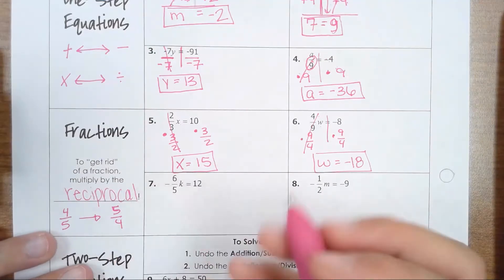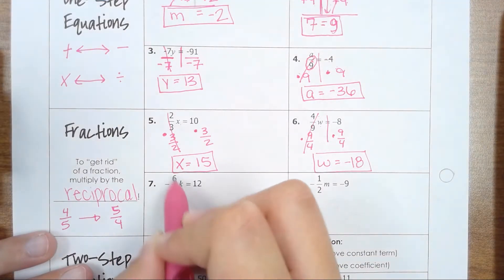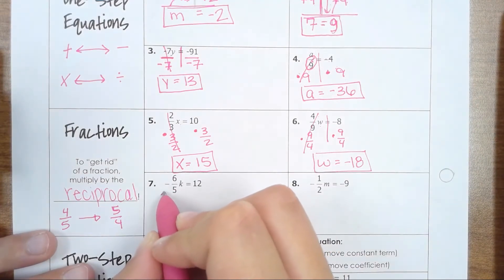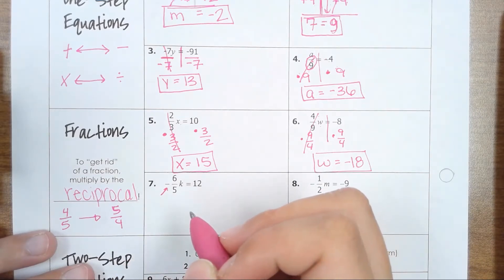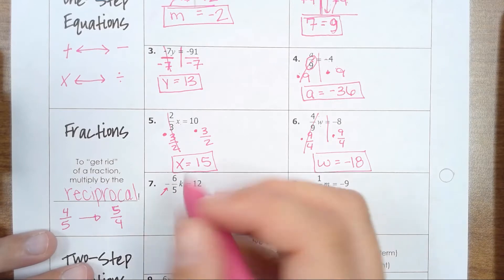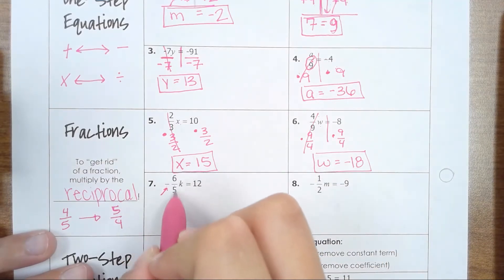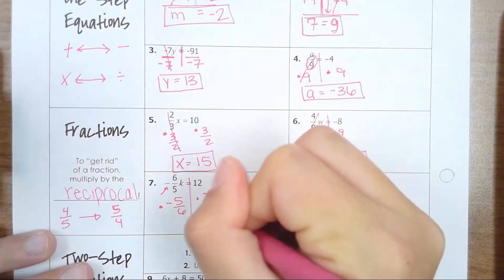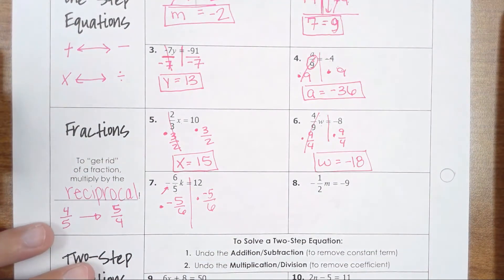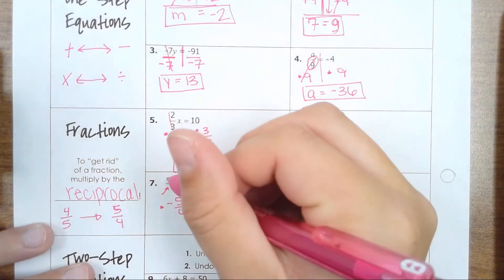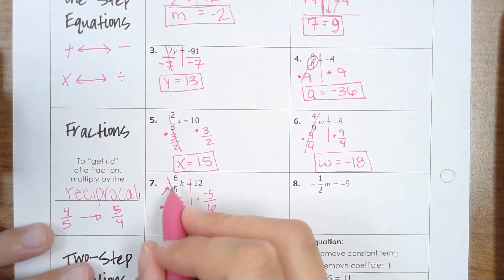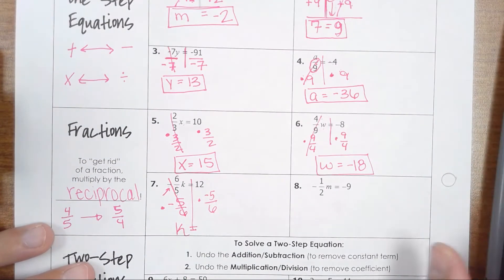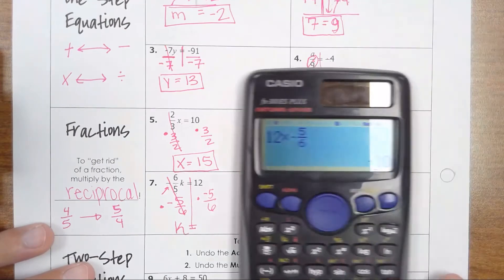Same thing for number 7. If you have a fractional coefficient, you need to get rid of that fraction by multiplying by its reciprocal. Notice how there is a negative sign in front of the fraction — when you multiply by the reciprocal, you keep the negative sign. So the reciprocal of negative six over five is negative five over six. Do that on both sides of the equal sign. Your negative six over five cancels, and you're left with k equals 12 times negative five-sixths, which is negative 10.